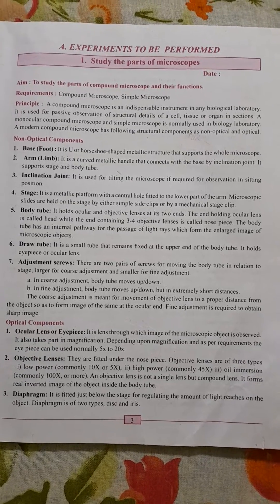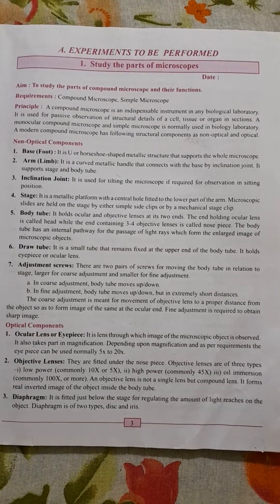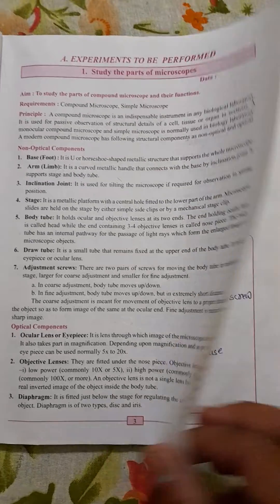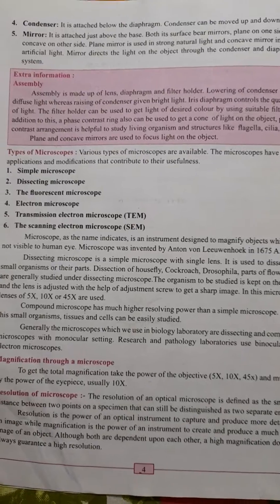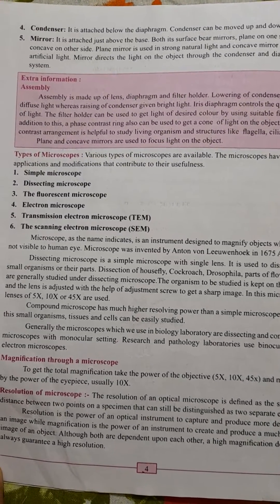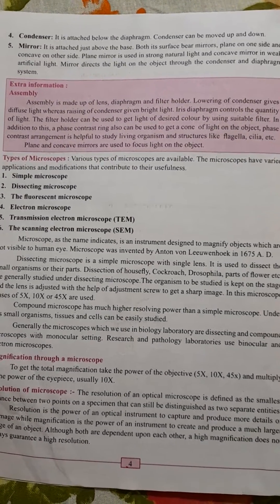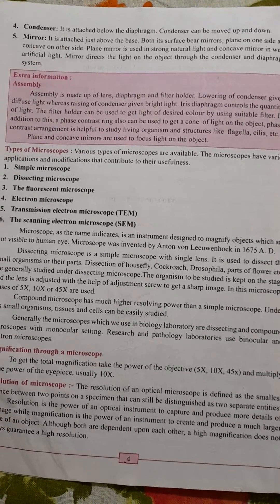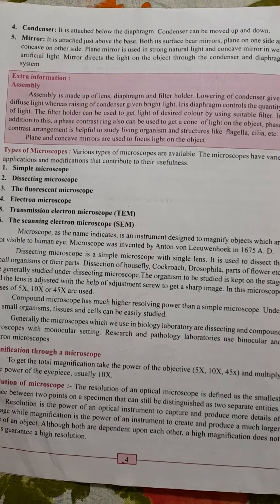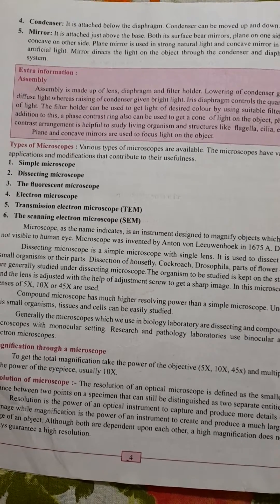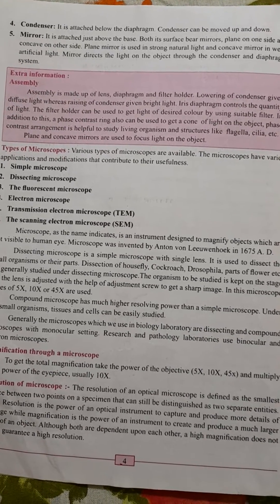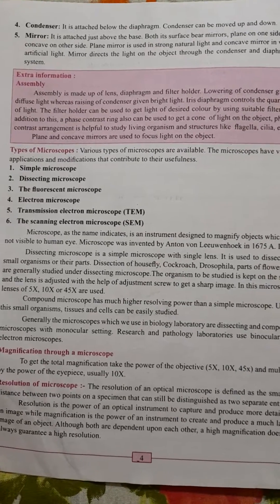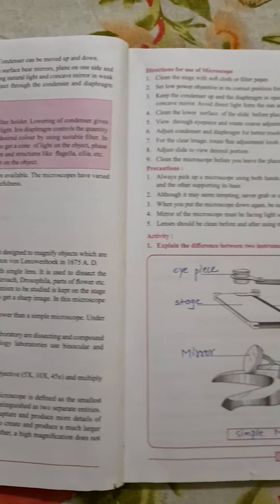Experiment number one: study the parts of the microscope. There are three types of microscope: the dissecting microscope, the compound microscope, and the electron microscope. The electron microscope includes the transmission electron microscope and the scanning electron microscope.